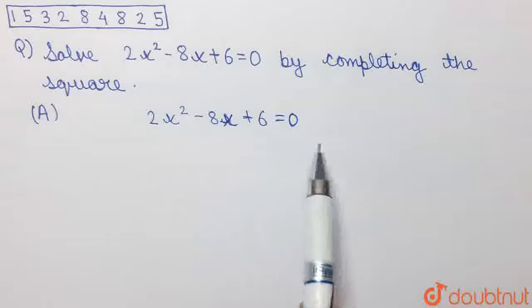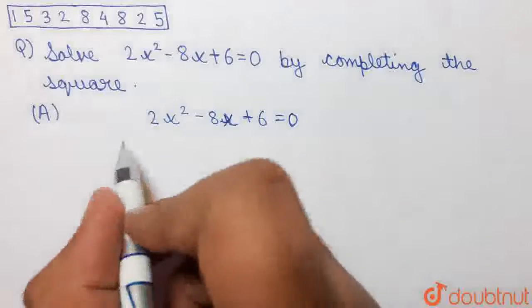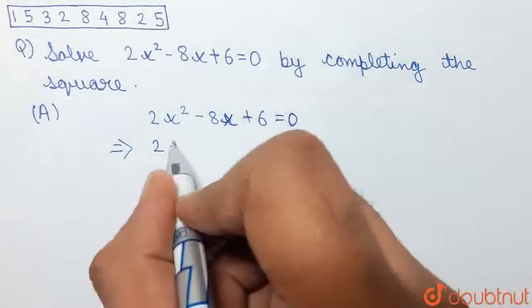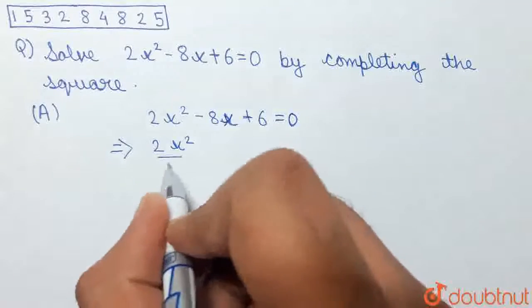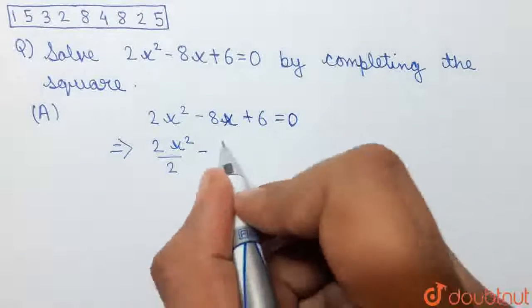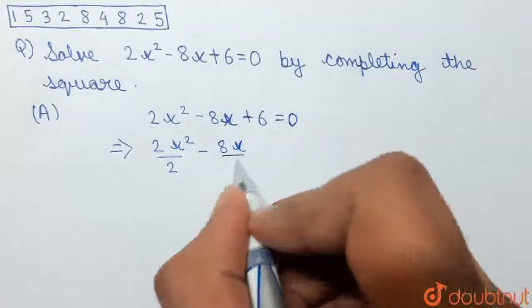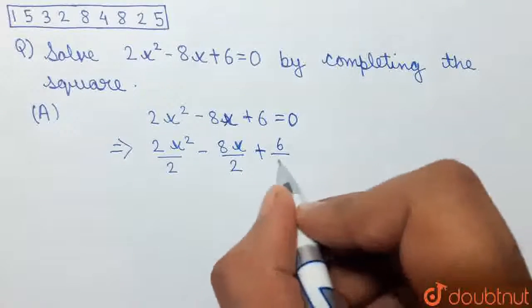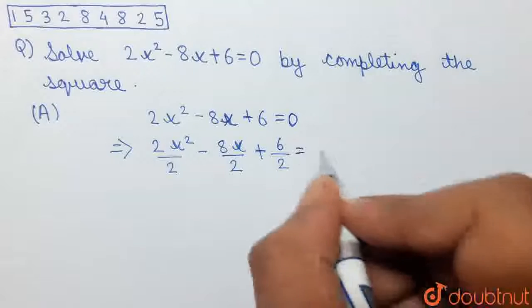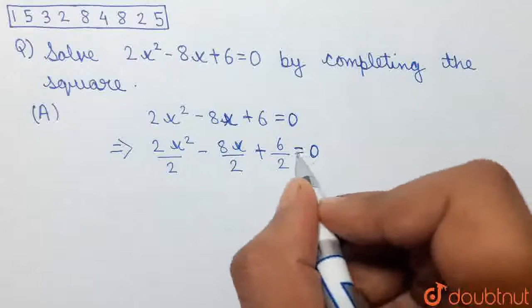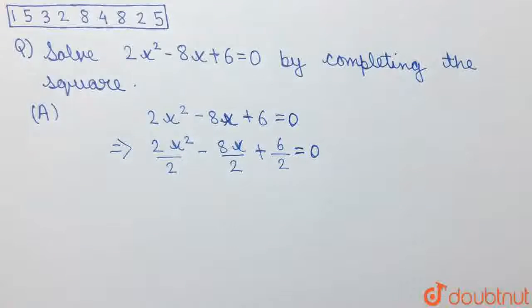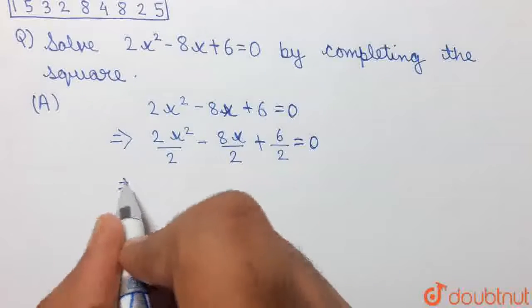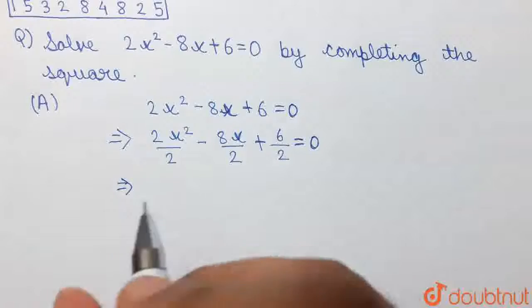Dividing both sides of this equation by 2, we have: 2x squared by 2, minus 8x by 2, plus 6 by 2, is equal to 0. 0 by 2 will obviously be 0. So now, simplifying this equation, we can write: 2 by 2 will cancel out.